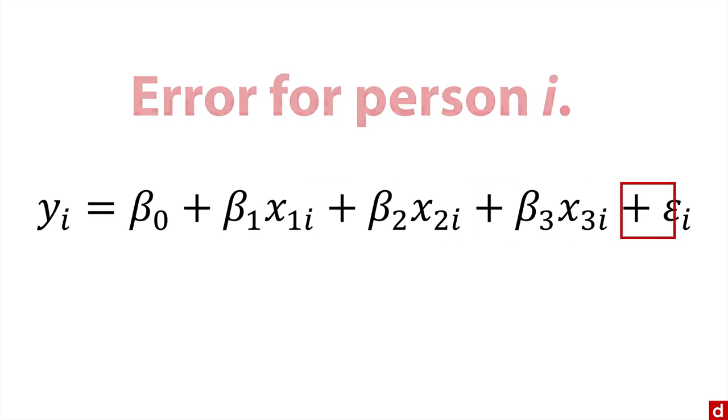And then at the end, we have little epsilon here, with an i for the error term for person i, which says how far off the prediction was from their actual score.